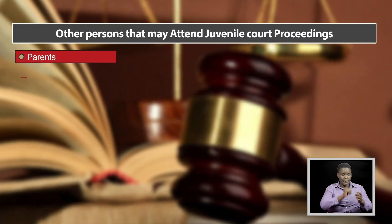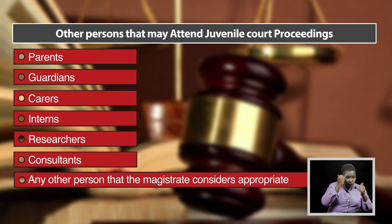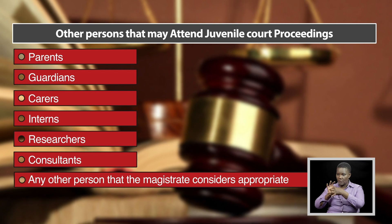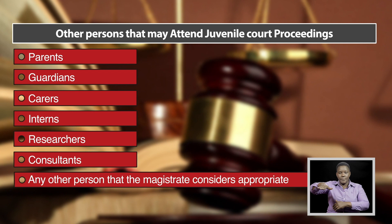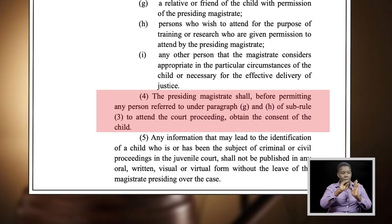Are there any other people allowed to attend juvenile court proceedings? Yes. The following persons may also attend: parents, guardians or carers, interns or researchers, consultants, and any other person the magistrate considers appropriate. With the exception of parents, guardians, or carers, other persons such as interns, researchers, and consultants should attend upon the discretion of the magistrate and after obtaining consent from the child, as provided under Rule 11, Sub-Rule 4 of the juvenile court rules.